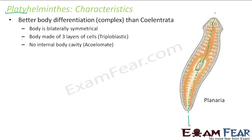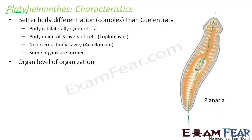Some organs are present in Platyhelminths. Cells were there in Porifera, tissues in Cnidaria, and now even some organs are present. Just by looking at Planaria, you can say it is more advanced compared to Hydra. In Hydra, you could not see anything like eyes or a mouth, but here you can see the eyes. So at least some organs are formed, and that is why it is said to be at organ level of organization — a step forward.